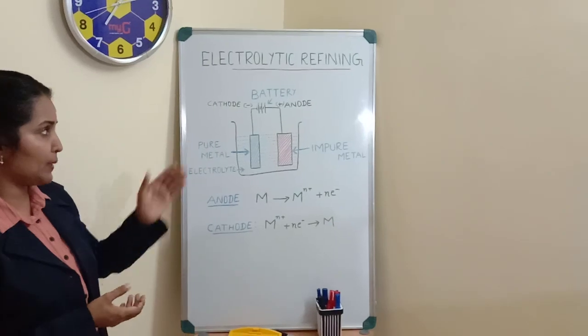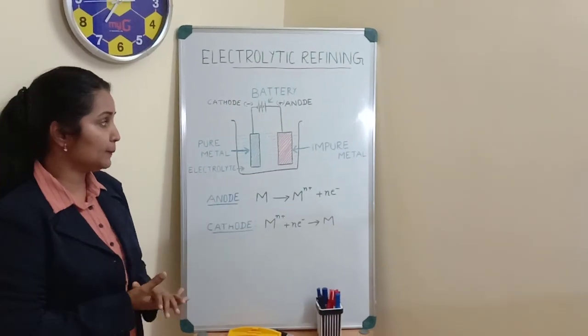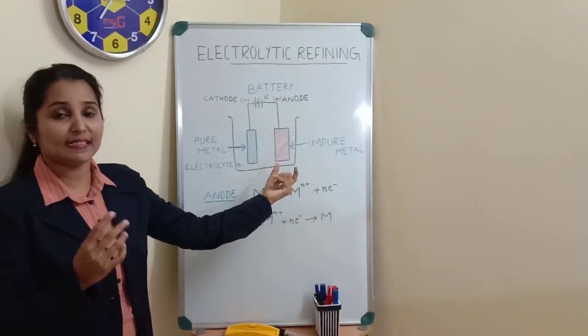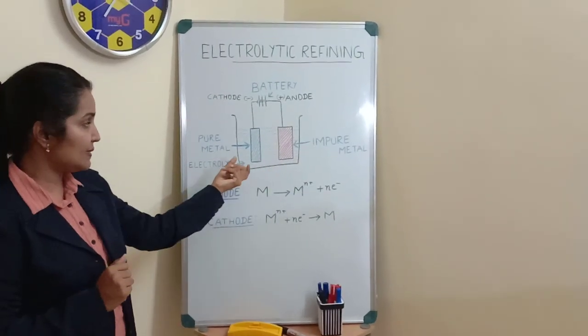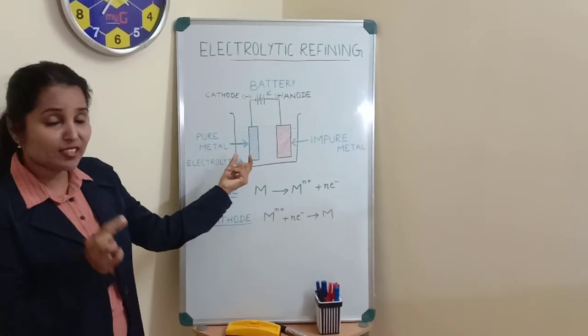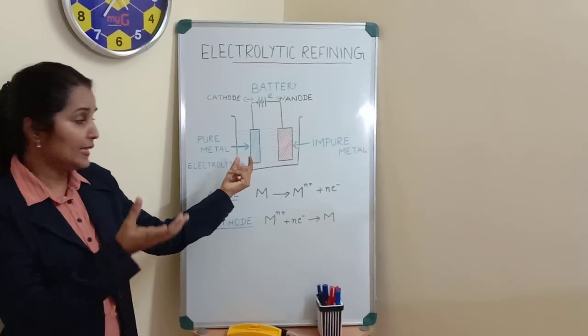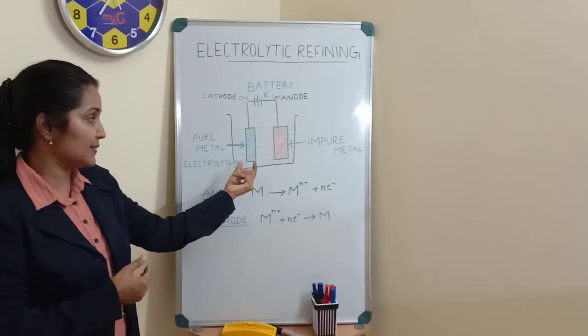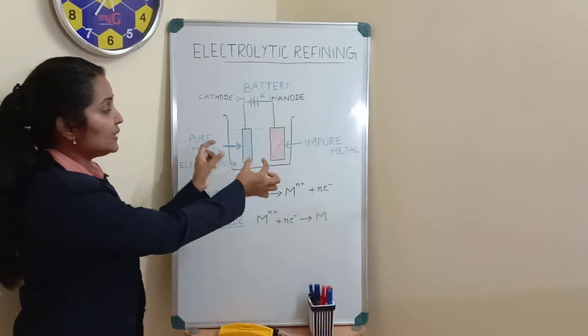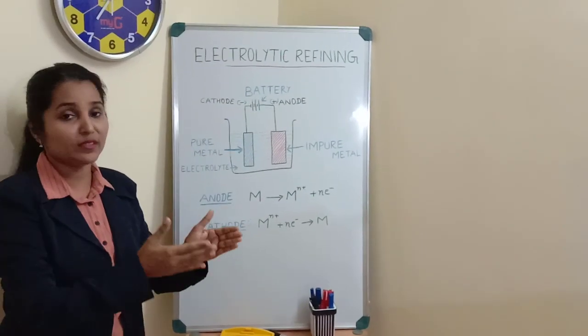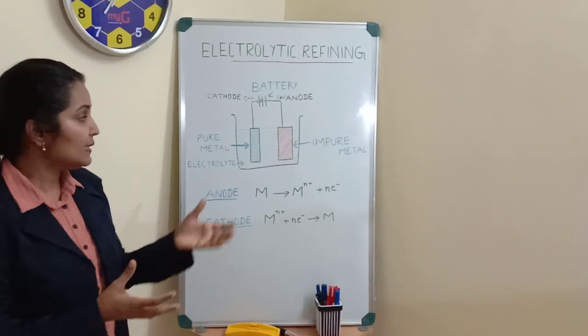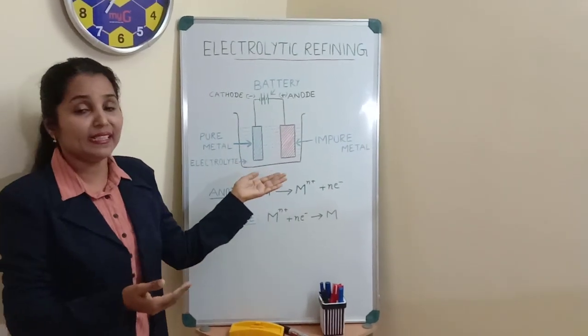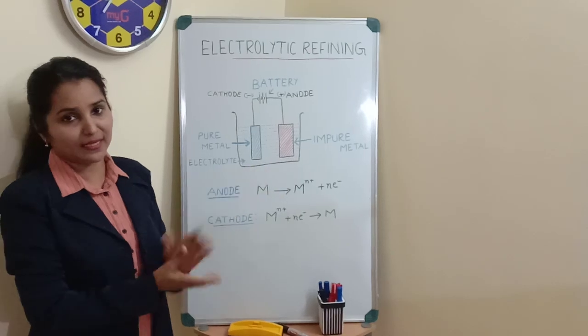Now coming to the experimental setup, you can see here, the impure metal to be refined is taken as the anode. A fine strip of the same metal in its pure form is taken as the cathode. Both these electrodes, anode and cathode, should be dipped in a suitable electrolyte, that is, an electrolyte containing the soluble salt of the same metal.